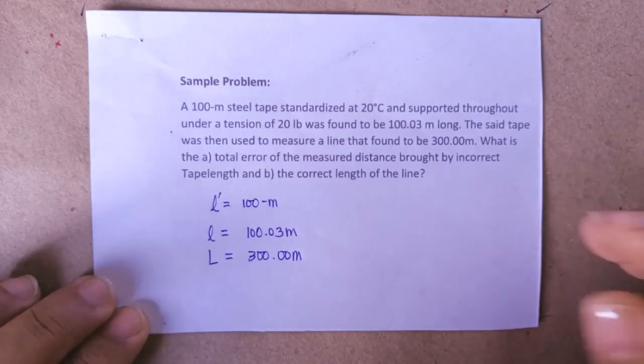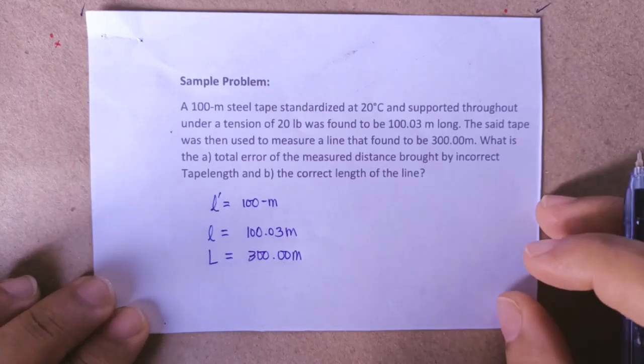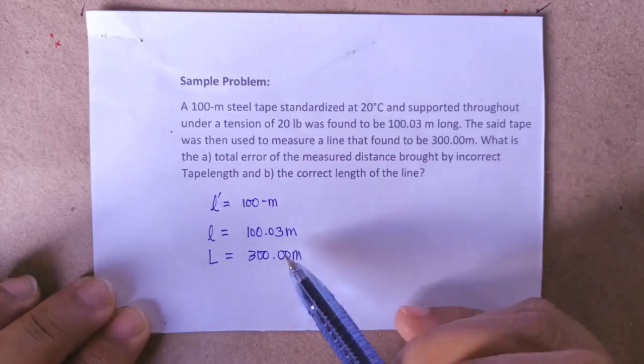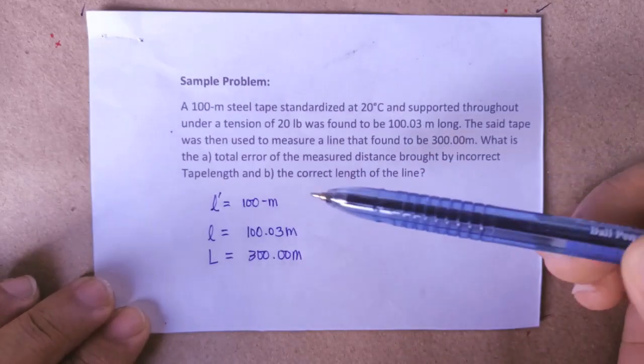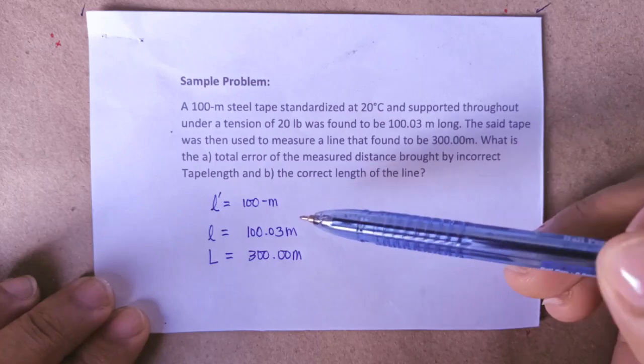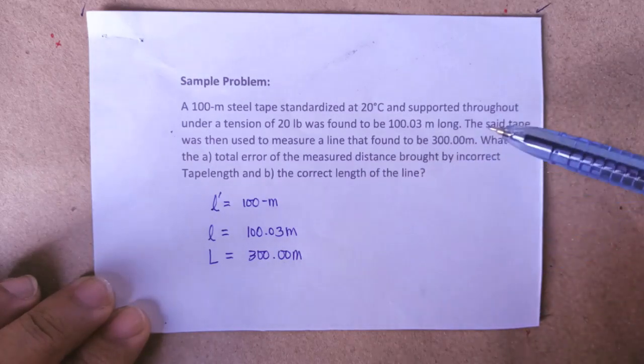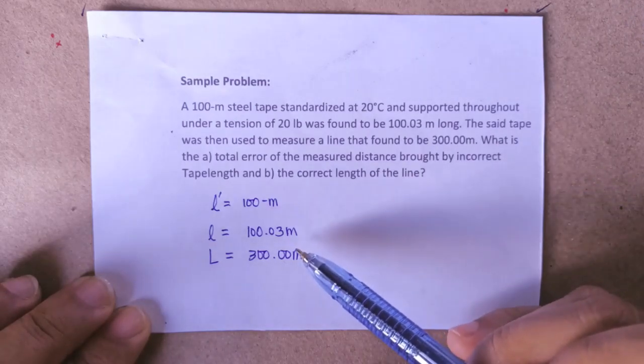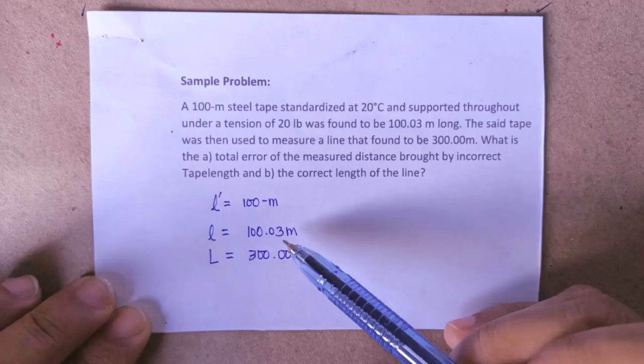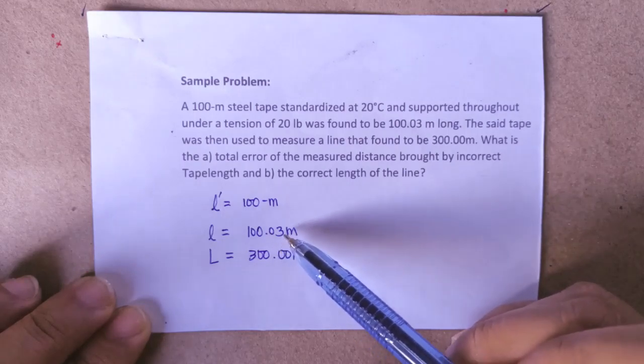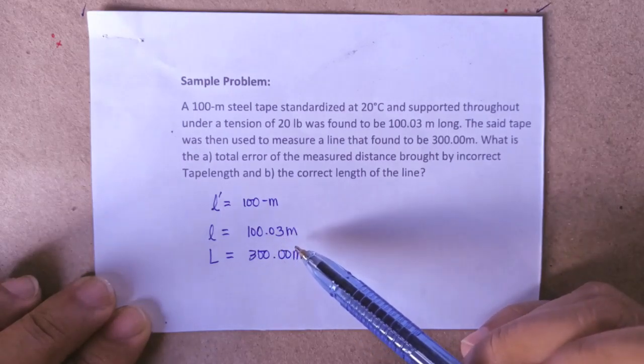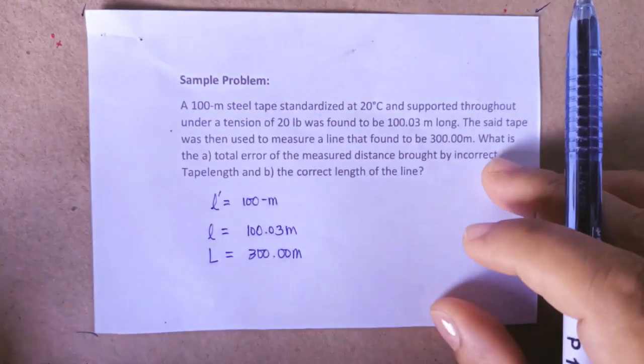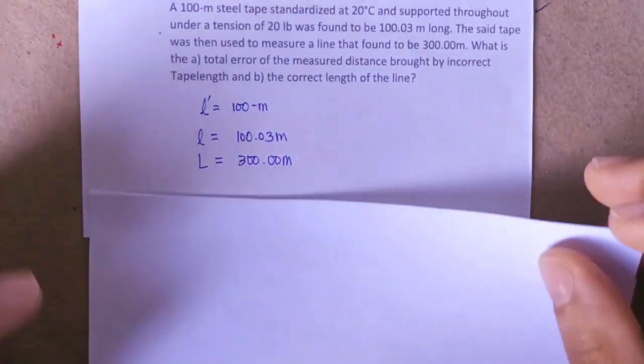We were asked what is the total error of the measured distance brought by this tape length. So if we examine carefully, the length should be 100 meters; however, due to some defect it was found out that it is 100.03 meters, so there is an error of 0.03 meters in every tape length. Recall the formula we discussed in our previous lesson.